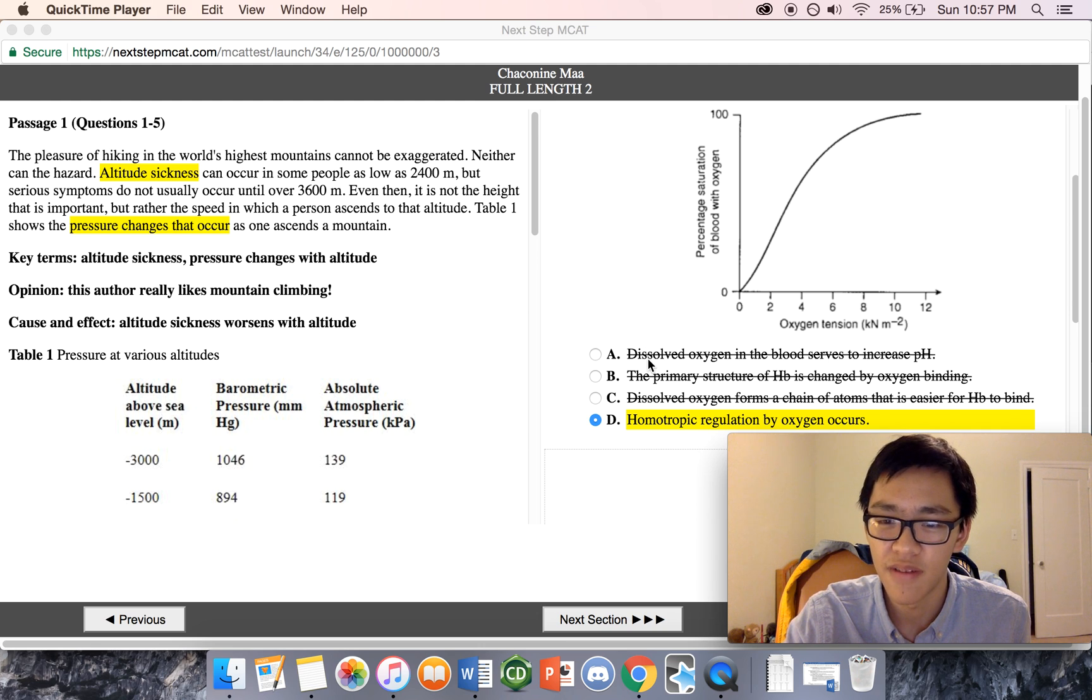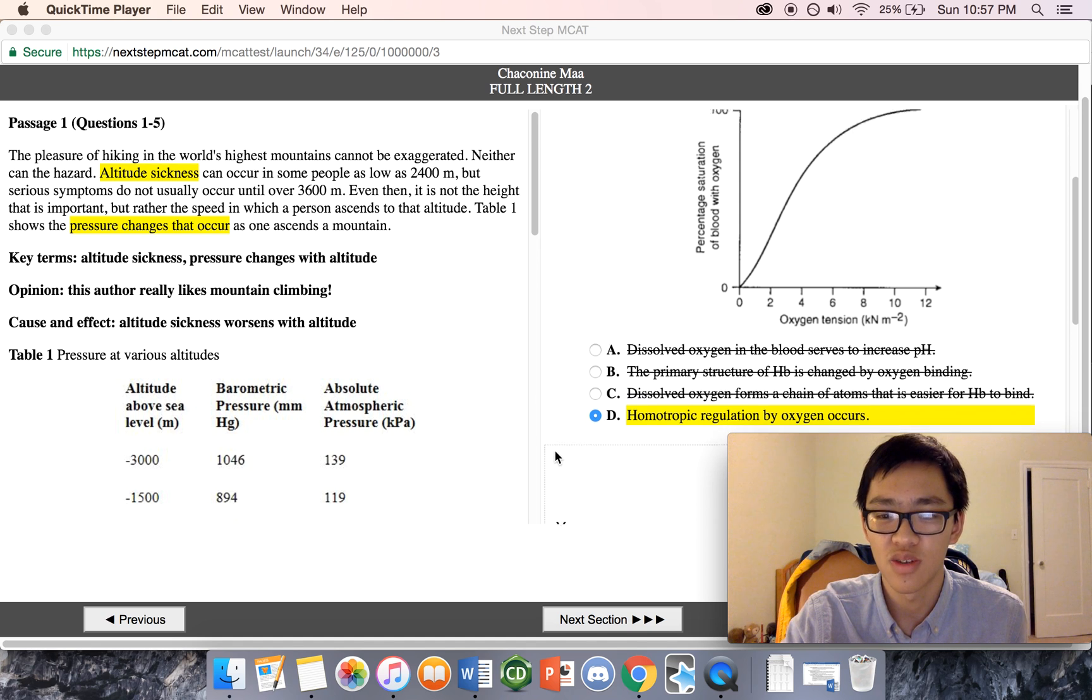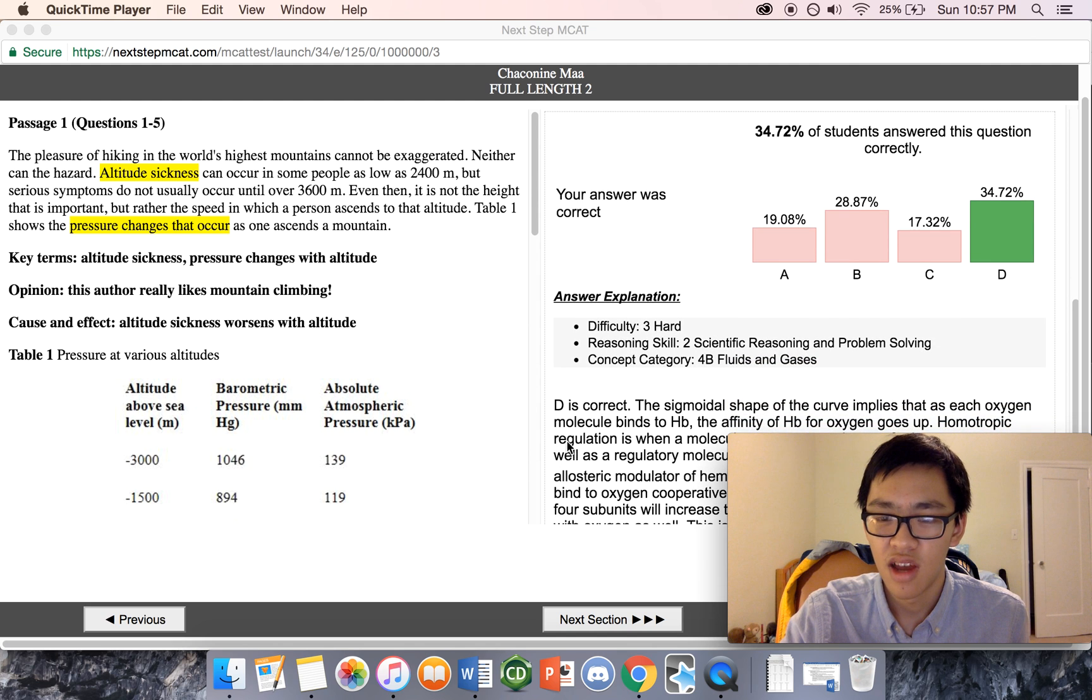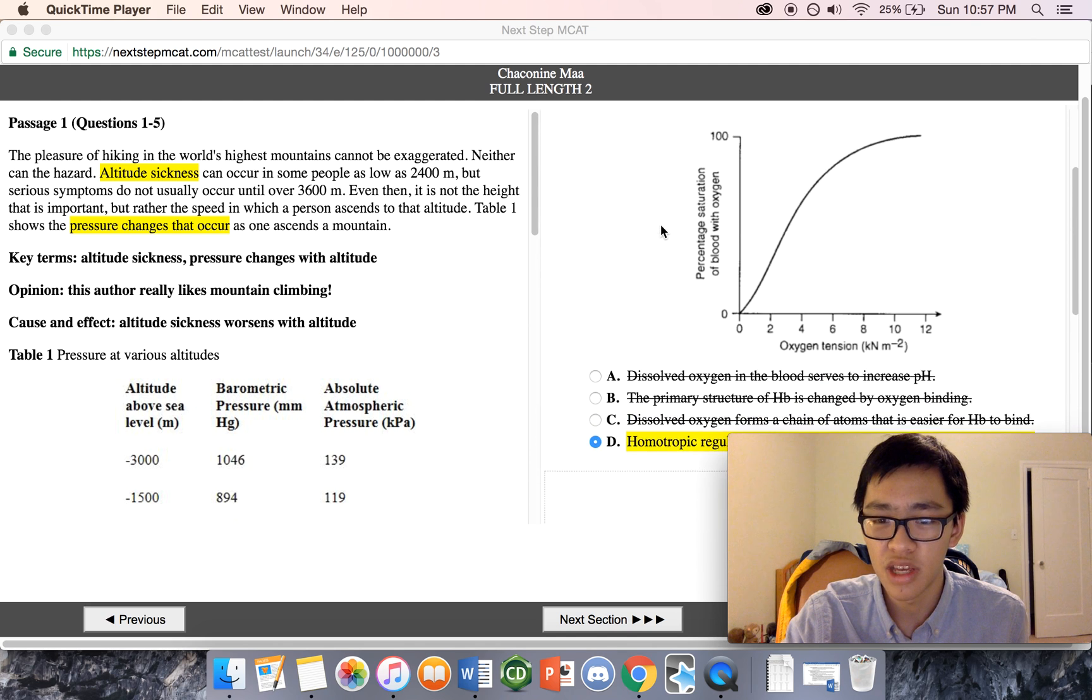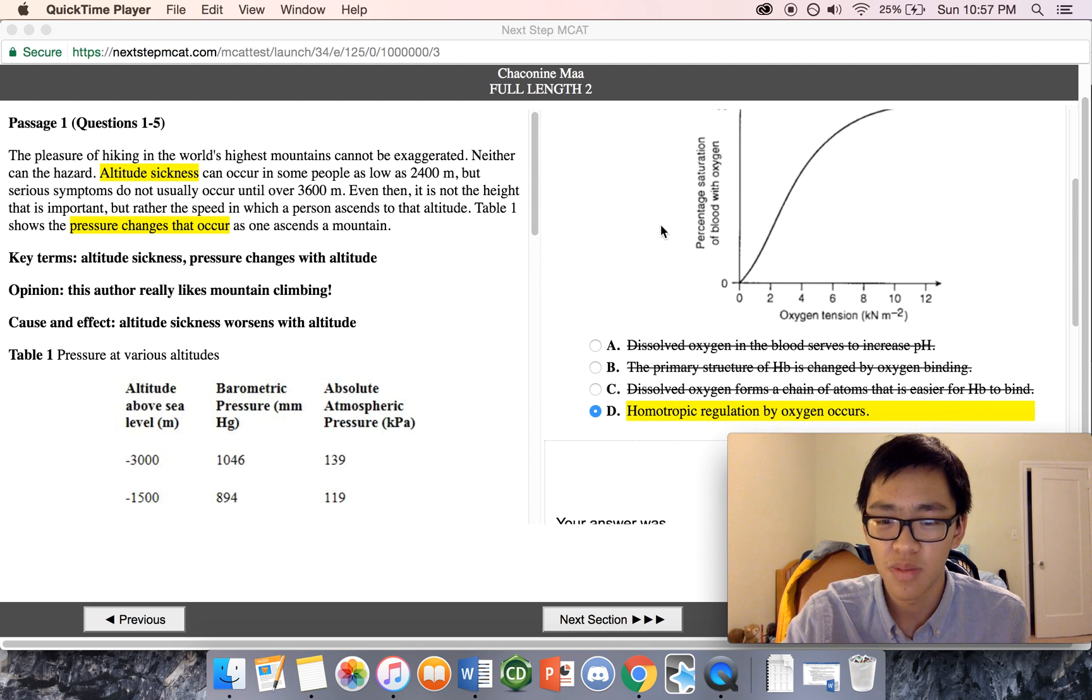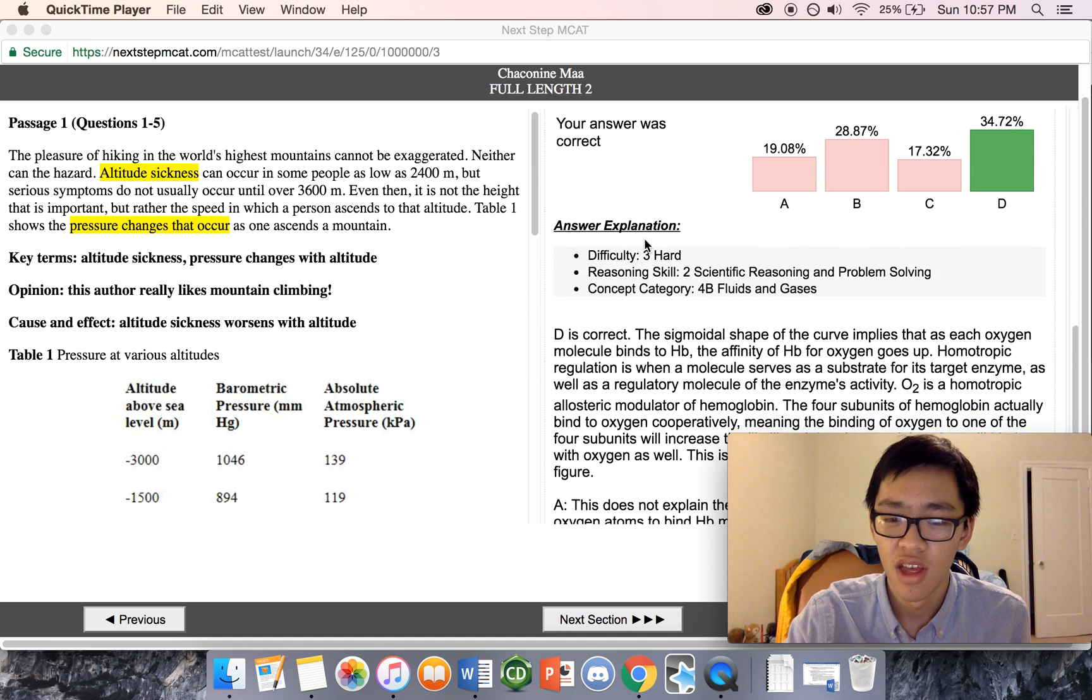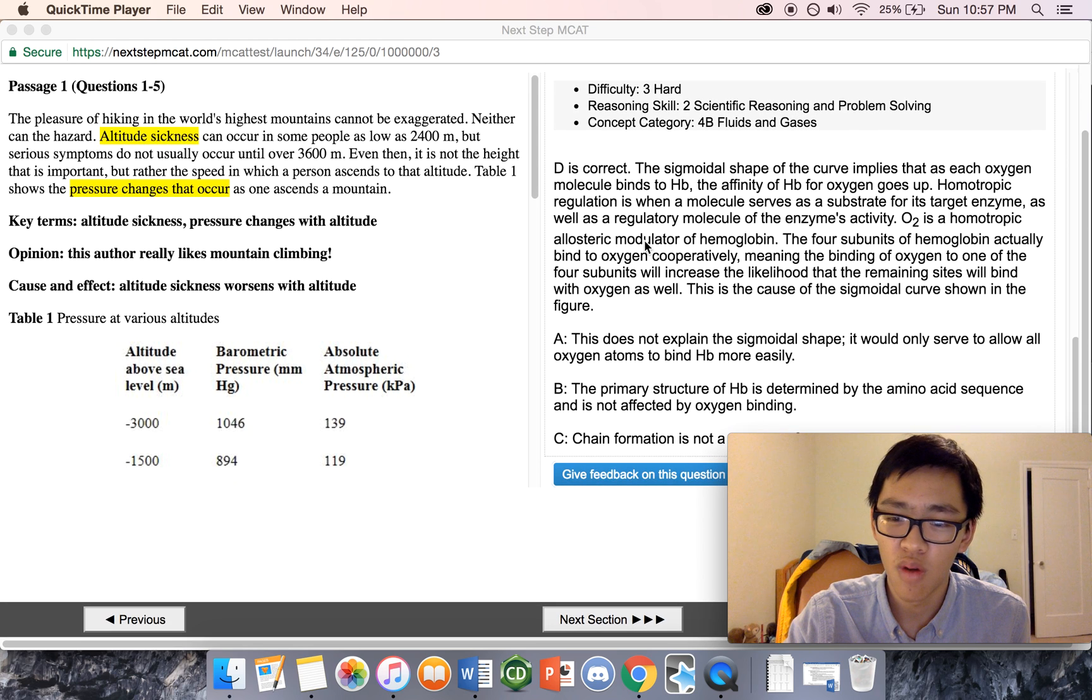Usually what I do is I go through the question and then I reiterate to myself what I thought the answers were. In this case I see that a lot of people picked choice B, so then I go back, look at choice B, and I remember that primary structure was the main problem with the answer. What I really like about NextStep is that they go over every single answer when it comes to more difficult questions.